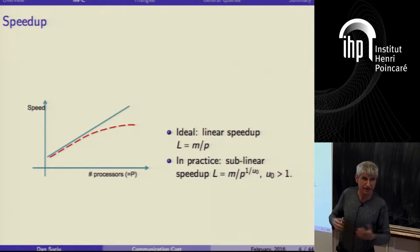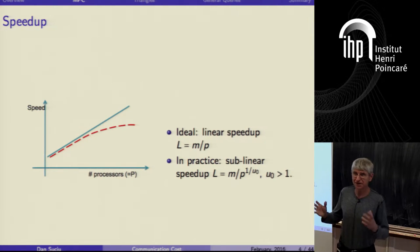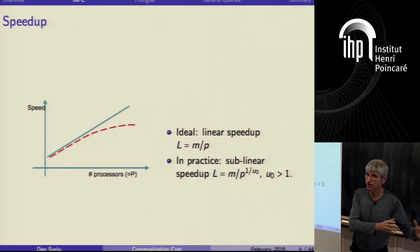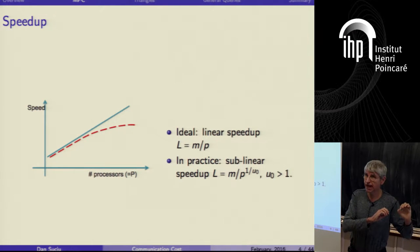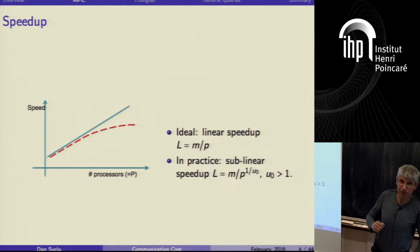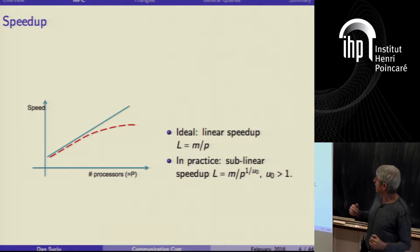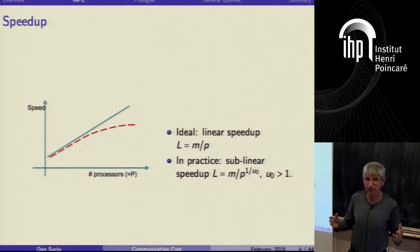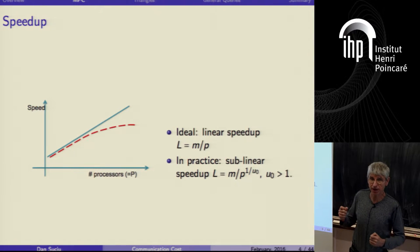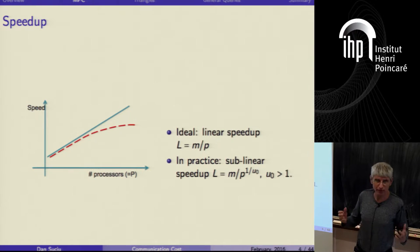Why do we care about understanding this load? Here is a simple way to solve any problem: take the distributed data and send it all to the first server, which is infinitely powerful and can compute anything. But then the load is huge — it's M, the size of the data. What we would like is an ideal load of M/P, meaning data is uniformly distributed. Engineers would be very happy because they achieve linear speedup — you increase P and the load decreases linearly. As we will see, there are theoretical limitations that force us to accept a polynomially smaller speedup.